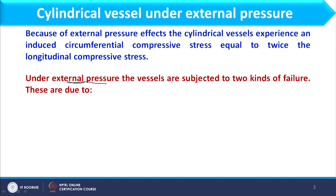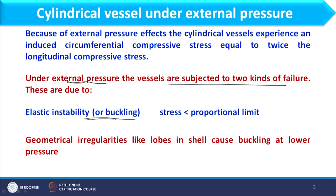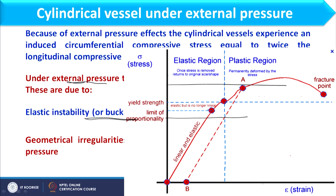Under external pressure, vessels are subjected to two kinds of failure. The first is elastic instability — also called buckling — when stress is less than the proportional limit. As far as failure of material is concerned, it occurs at the elastic limit or the plastic limit. When it is in the elastic region it can reform its shape, but when in the plastic region the failure will be permanent. Up to the proportional limit the material follows Hooke's law.